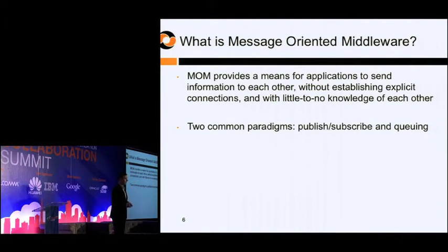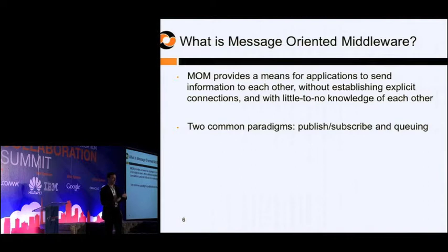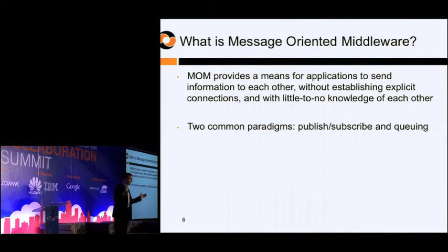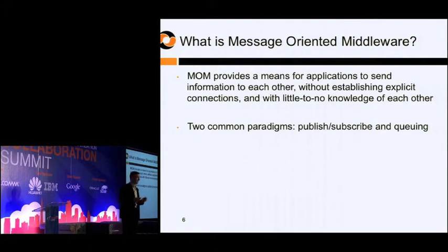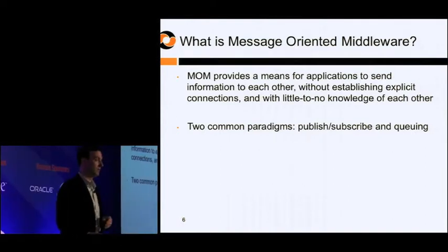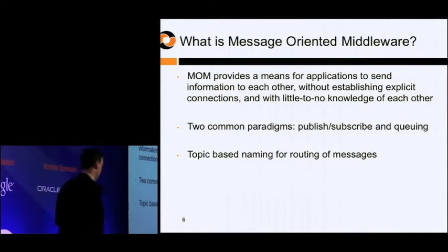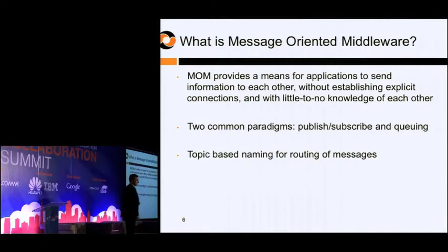There are two primary paradigms for how this gets done today. Publish and subscribe is one of the very common ones, and queuing is the other. With publish and subscribe, I have a piece of information, I broadcast it out, and if you care, you subscribe — it's more like the television model. Queuing is where you take all the messages, drop them into a big bucket, and then you can read from that bucket whenever you want.